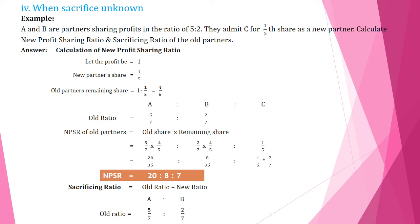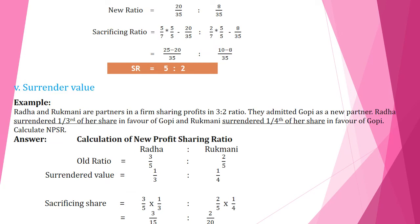To calculate the sacrificing ratio, use: old ratio minus new ratio. For A: old share 5/7, new share 20/35 — multiply 5/7 by 5/5 to get 25/35, then 25/35 − 20/35 = 5/35. For B: old share 2/7, new share 8/35 — multiply 2/7 by 5/5 to get 10/35, then 10/35 − 8/35 = 2/35. So the sacrificing ratio is 5:2.